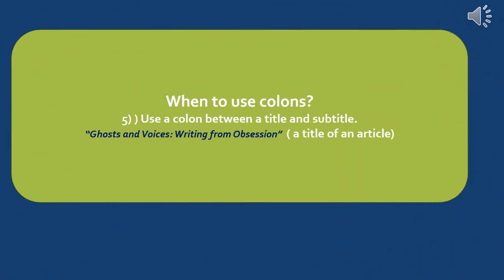Sometimes when we read a book or an article, we find a main title and then a smaller one called a subtitle. Between the title and the subtitle, we put a colon to differentiate them. For example: 'Ghosts and Voices: Writing from Obsession.' The main title is 'Ghosts and Voices' and 'Writing from Obsession' is the subtitle.